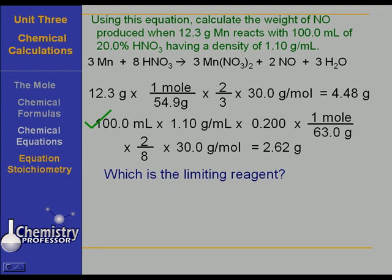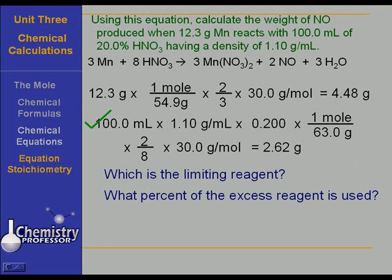What percent of the excess reagent is used? In other words, what percent of the manganese was consumed? Well, there are several ways to work that. You could take that 2.62 grams of nitric oxide, plug it in, work it backwards, figure out the weight of manganese, put that weight over 12.3 grams times 100. But that's the hard way. Here's the easy way. To find the percent of excess reagent used, take 2.6 grams. That's the amount that was produced from the limiting reagent. Divide it by 4.48 grams. That's the amount that would have been produced had the excess reagent been all consumed. Times 100 tells us that 58.5% of the excess reagent was actually used. Look at that and see if it makes sense to you. It's certainly a quick and easy way to do it, isn't it?